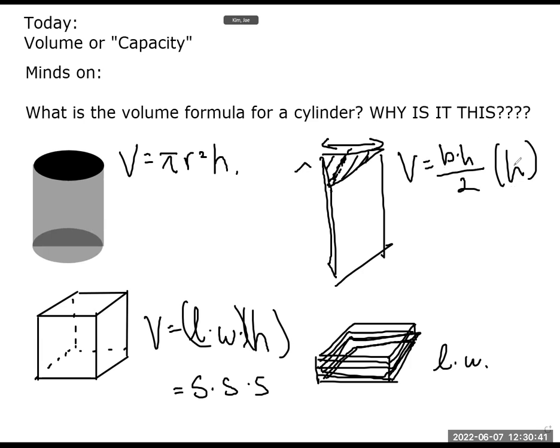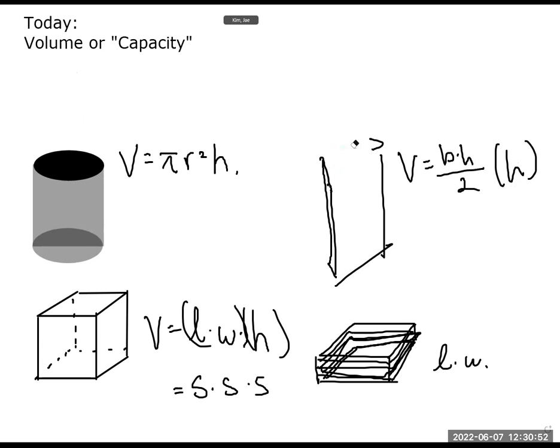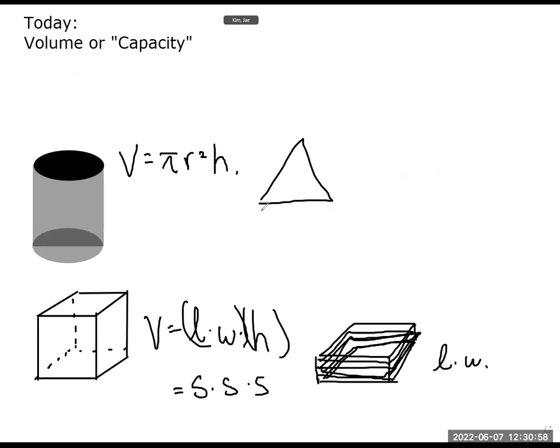So without looking at the sheet, don't look at the formula, what if I gave you a triangular base prism? What's the area of a triangle? Base times height. So this base times the height divided by 2, and then multiplied by this height. So you have to be sure not to confuse those two heights.